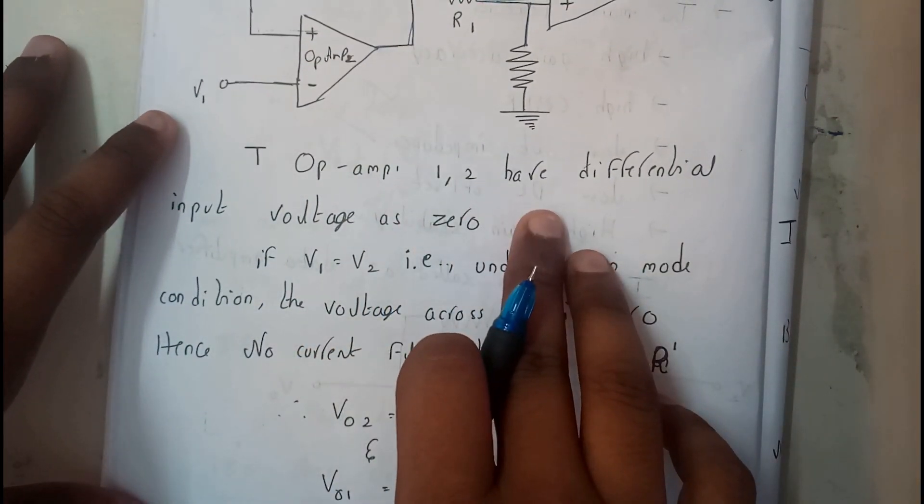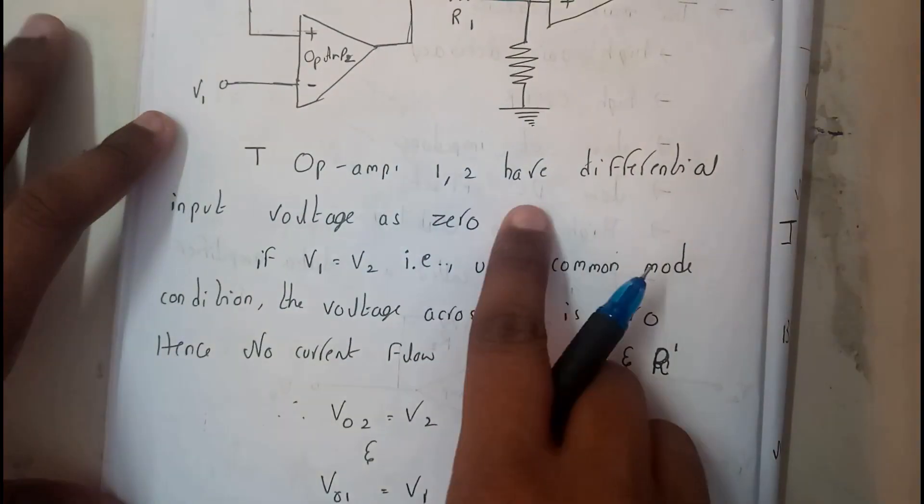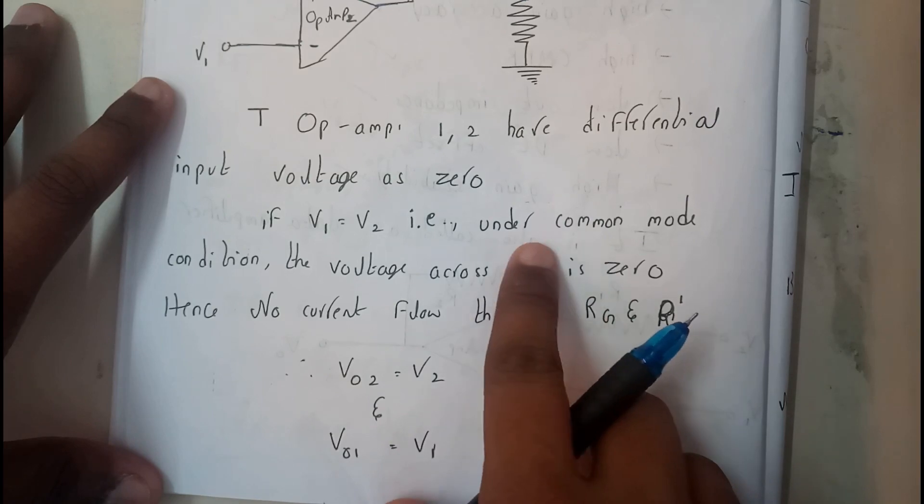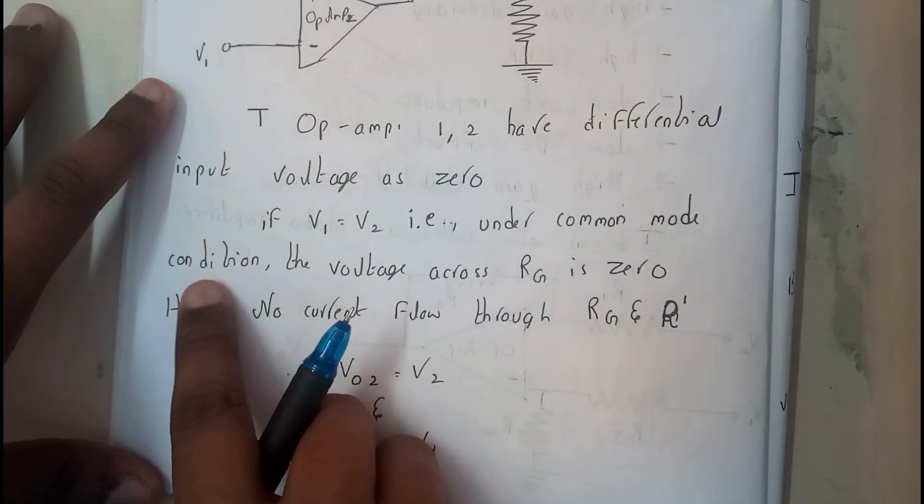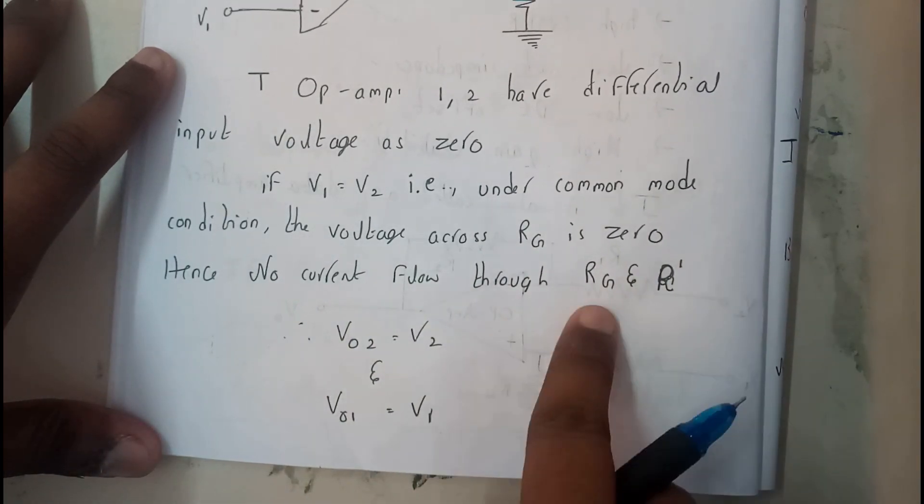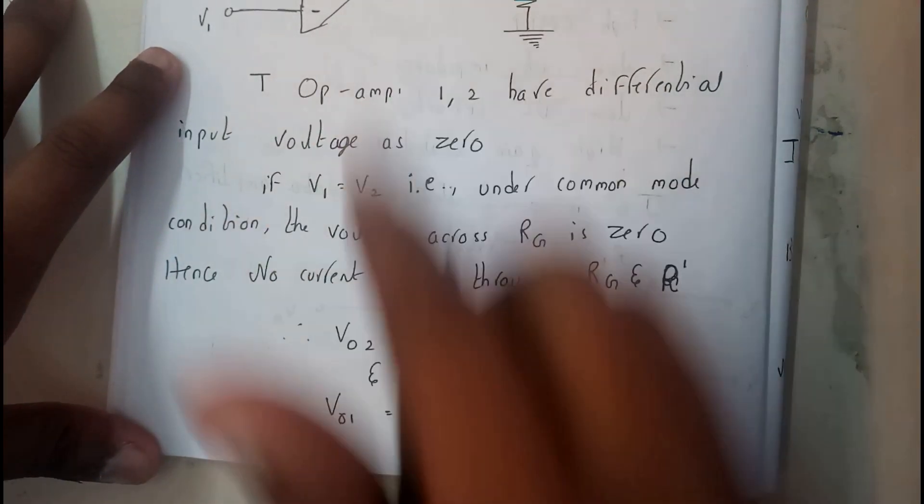Operational amplifier 1 and 2 have differential input as 0 if V1 equals V2. That is under common mode condition, the voltage across Rg is 0. Hence there is no flow through Rg and R1. So V02 equals V2 and V01 equals V1.